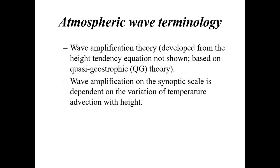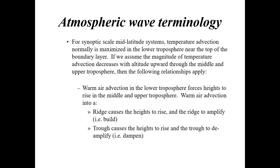Mid-latitude systems are the storm systems we're very familiar with here in the United States. This covers the latitudes of the westerly wind belt from 30 to 60 degrees north. For synoptic-scale mid-latitude systems, temperature advection is normally maximized in the lower troposphere near the top of the boundary layer — which extends from the Earth's surface to about 3,000 feet above ground level.